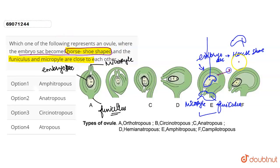And this particular shape is of amphitropous ovule. As we can see from the E labeling, this is the amphitropous ovule. So the correct answer is option number one.